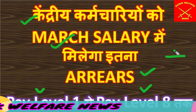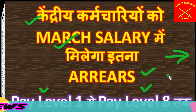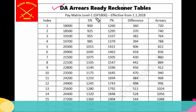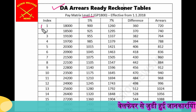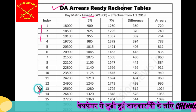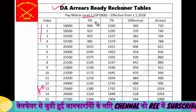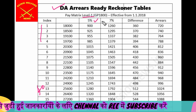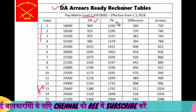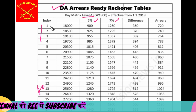Friends, see how many arrears Kendriye Karamchari will get. This is the DA Arrear Skill Table. Pay Level 1 — stages are from 1 to 40. This is the basic pay. You had 5% DA before. Now, in January, you have 7% DA.